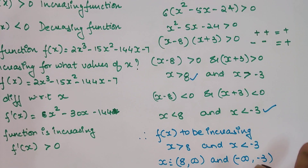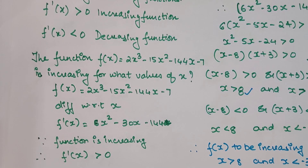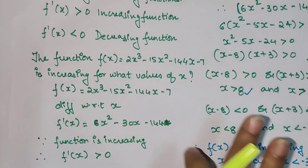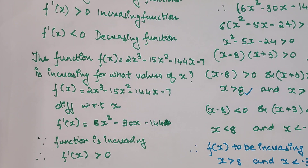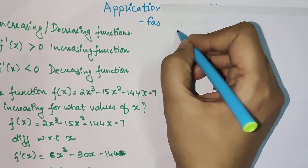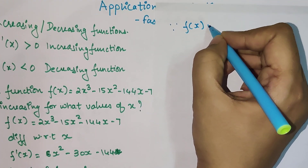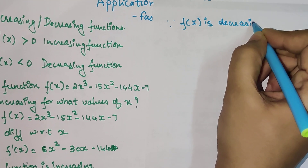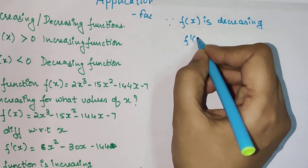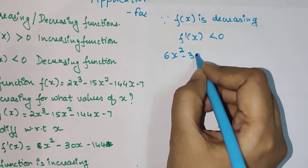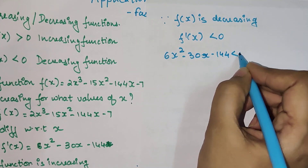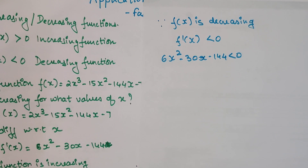Now, you must be wondering: this is the case when the function is increasing. What if the same question asked us to find the values of x for which the function is decreasing? In that case, we would say: since f(x) is decreasing, f'(x) < 0. So f'(x) = 6x² - 30x - 144 < 0. If you are finding this explanation helpful, please hit the like button — it gives me encouragement and helps the YouTube algorithm surface this content to Class 12 students who need it.